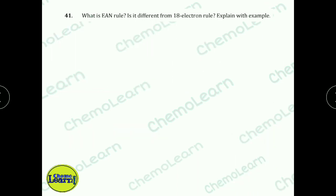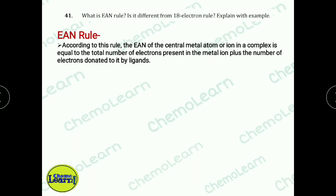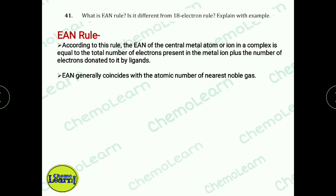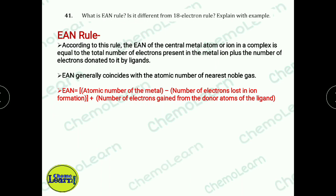The first question is: what is the EAN rule? Is it different from the 18-electron rule? Explain with an example. EAN rule means Effective Atomic Number. This rule says that we count the total number of electrons in the complex of the central metal atom including the electrons donated from the ligands. The formula is: atomic number of metal minus number of electrons lost in ion formation (oxidation state) plus number of electrons gained from the donor atom of the ligand.